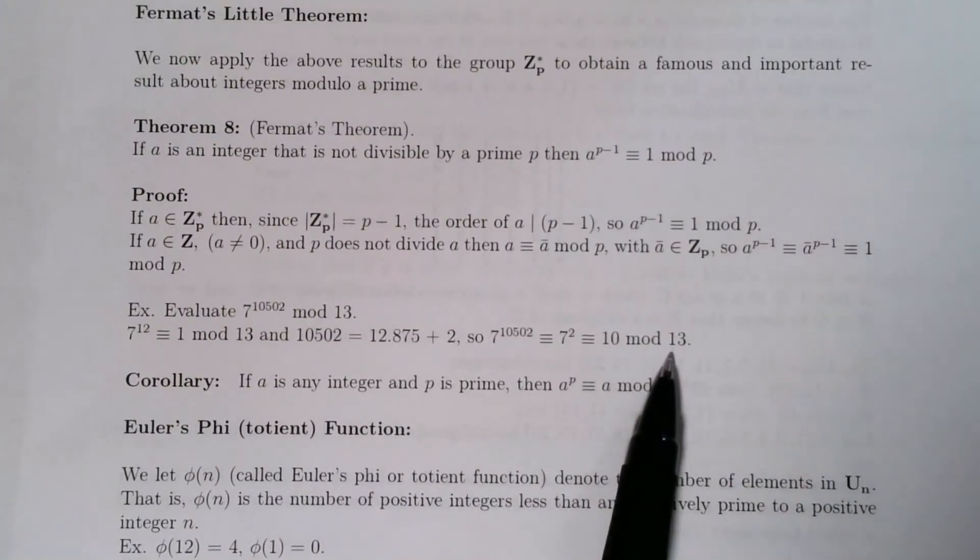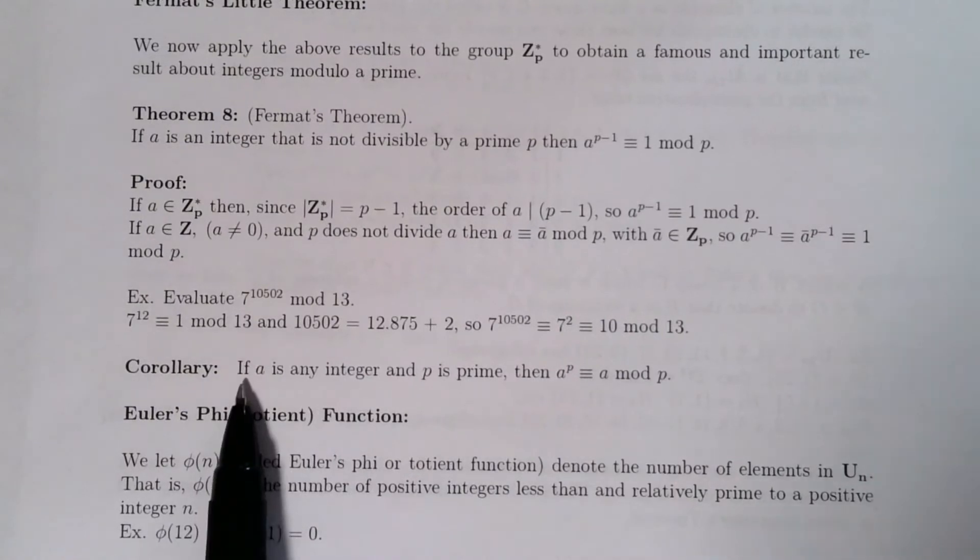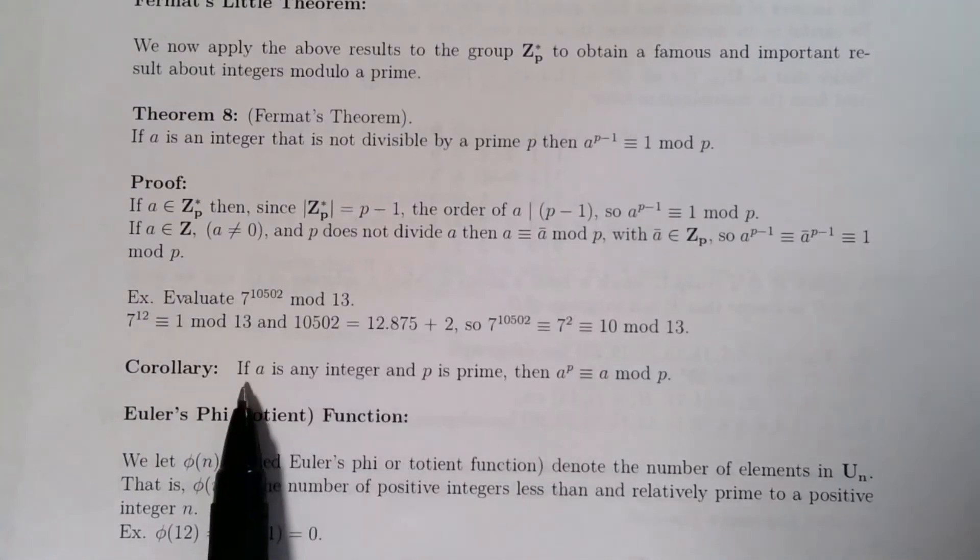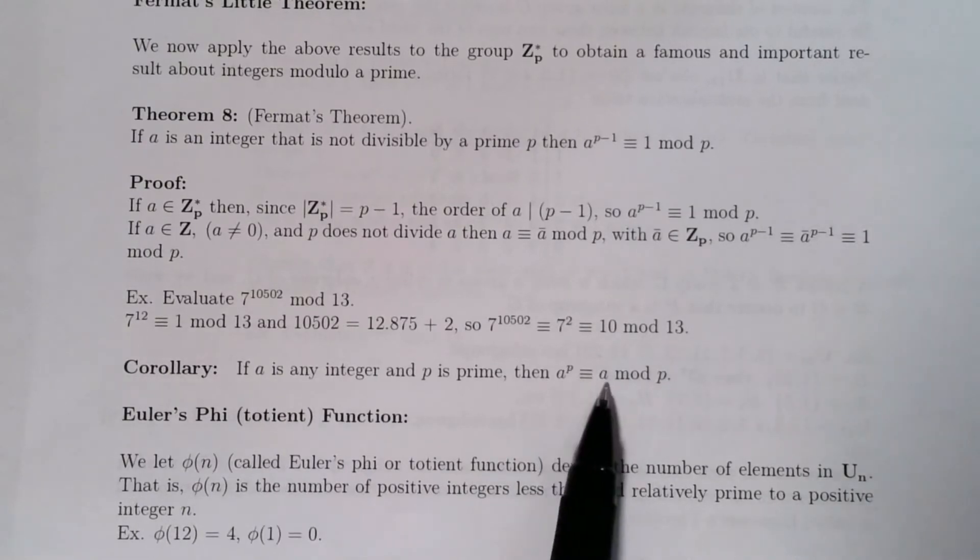Now, as a corollary to Fermat's little theorem, we can just multiply both sides of Fermat's little theorem by a. And then if a is 0, or if a is divisible by p, we just get 0 is congruent to 0. But otherwise, multiplying by a gives me a^p is congruent to a mod p.